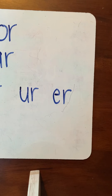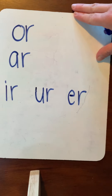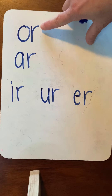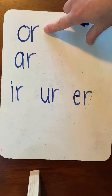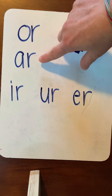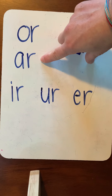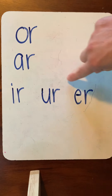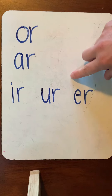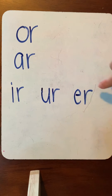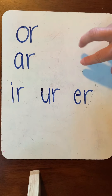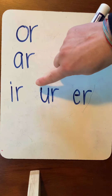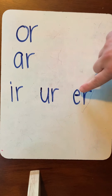Now let's think about these sounds. What does O-R say? A-R. And then these three all make the same sound. This is when R is so noisy, you can't even hear the vowel with it. Er, er, er.